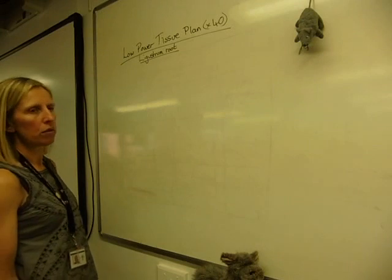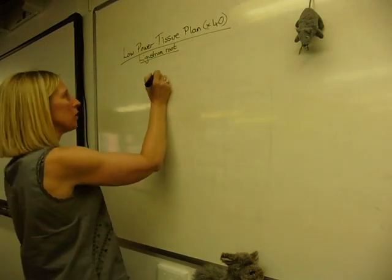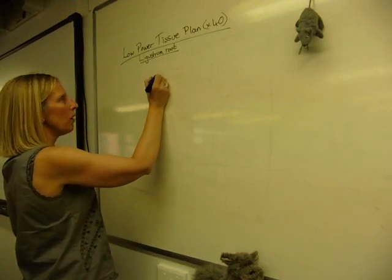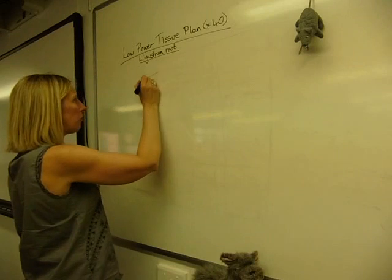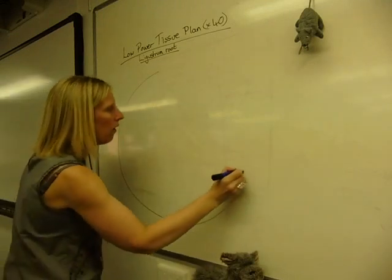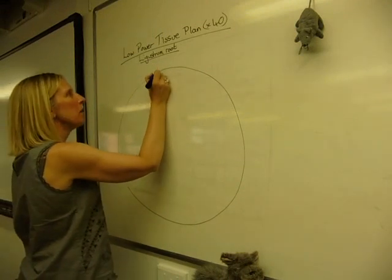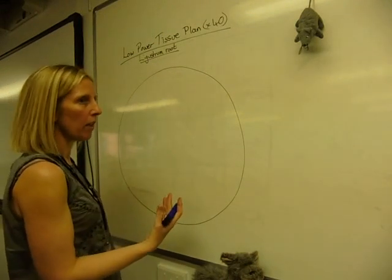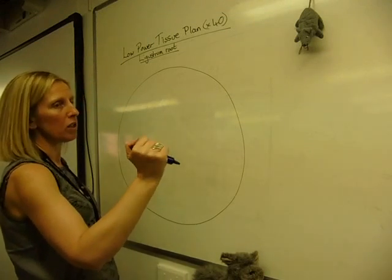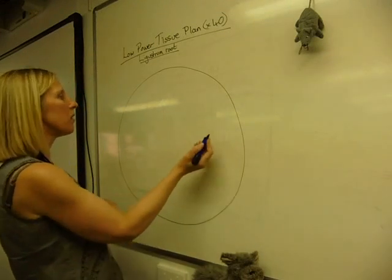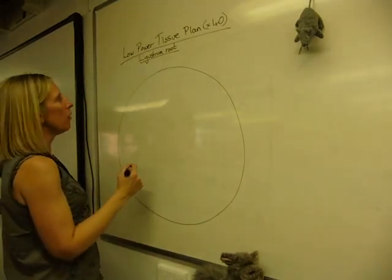I'm going to do a ligustrum root. The root is basically a cross section, so it looks like a circle. You do a single line to get the overall size of it. You try to make sure that the line isn't too heavy, so it doesn't look like you've done it with a really soft pencil and the line is really thick. It's just a nice even line with the same weight all the way around.